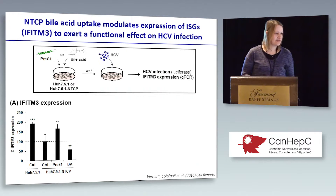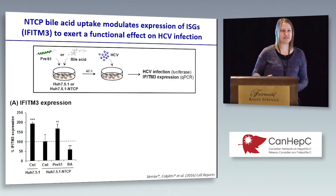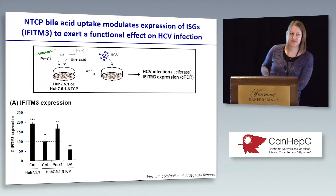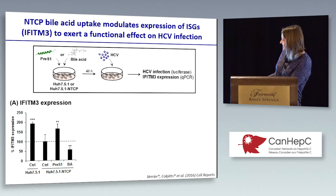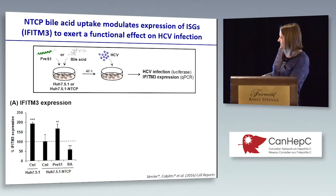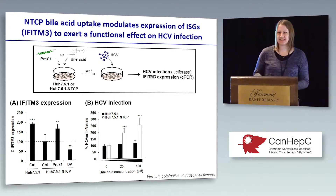We looked at IFITM3 expression in relation to NTCP expression and modulation of NTCP bile acid transport activity. In the parental cell line without NTCP, baseline expression is highest. Adding NTCP reduces IFITM3 expression by about 50%, both at the mRNA and protein level. However, adding pre-S1 to block bile acid uptake restores IFITM3 expression to parental levels, and adding bile acids further suppresses IFITM3 expression even more. This correlates with the effect seen on HCV infection.